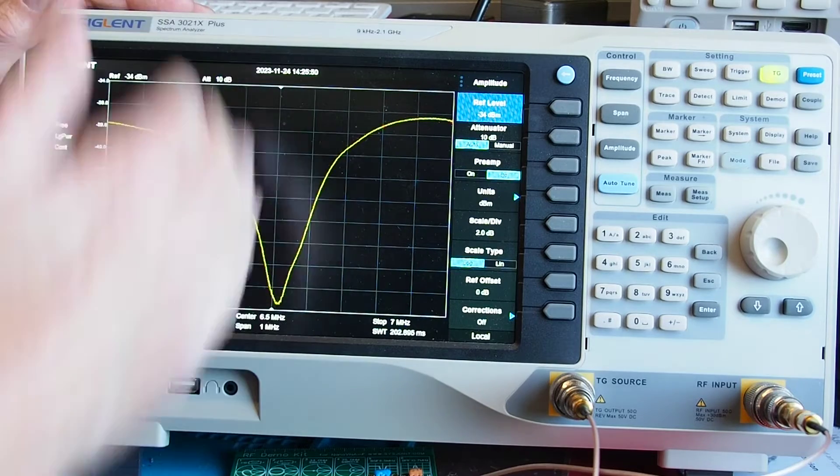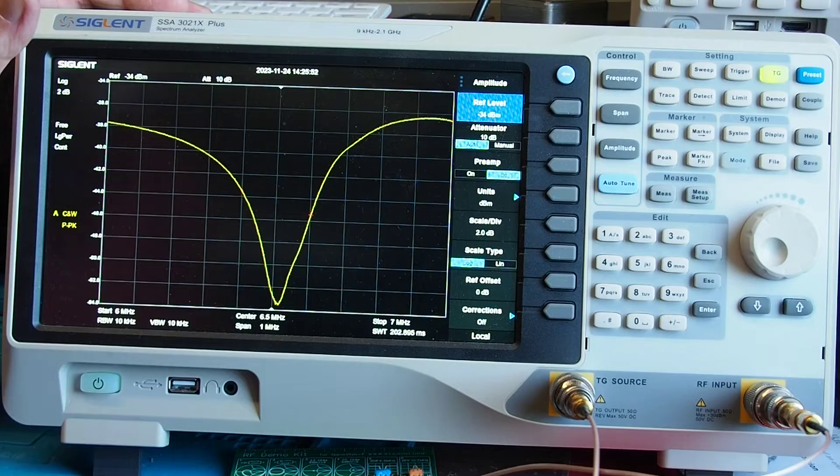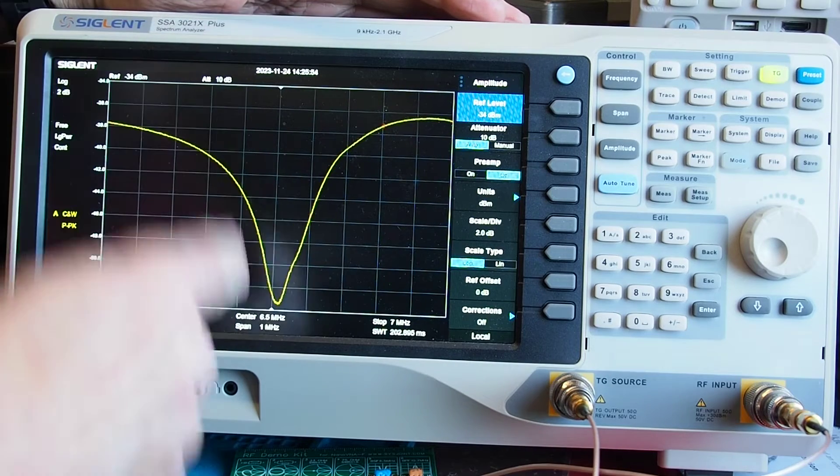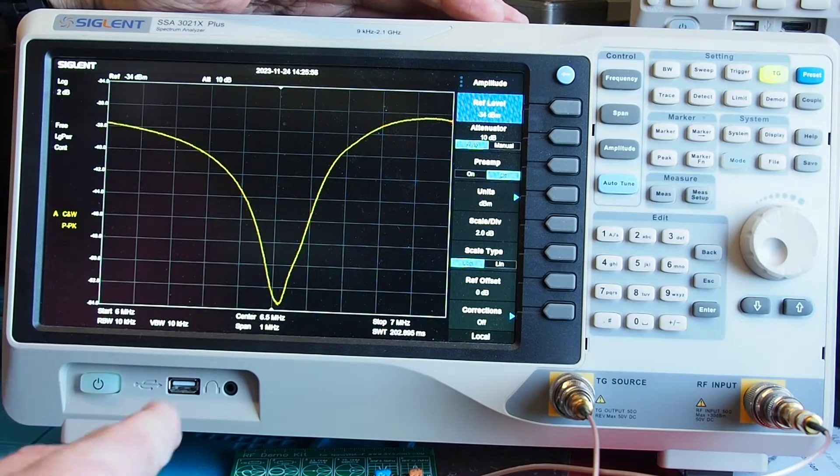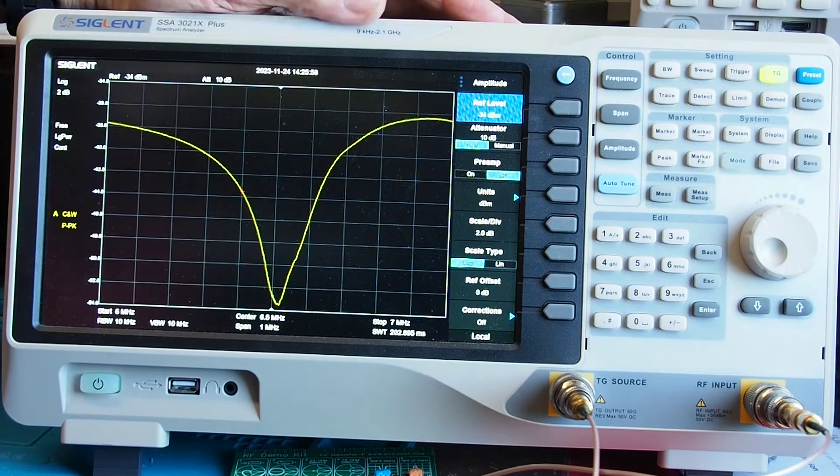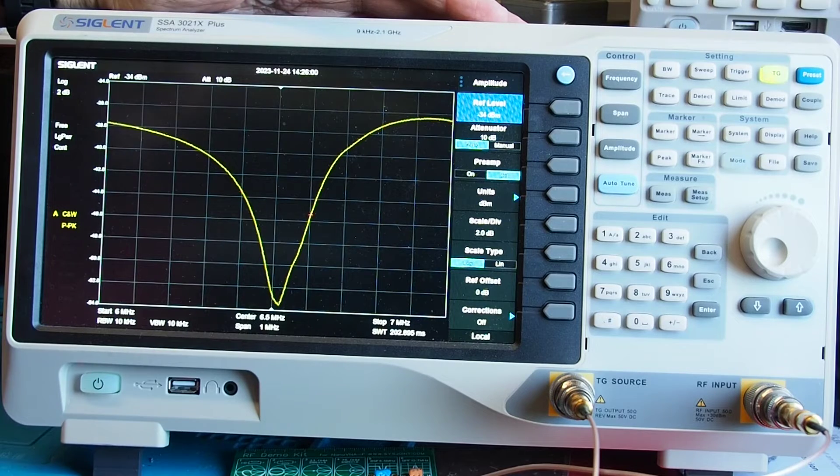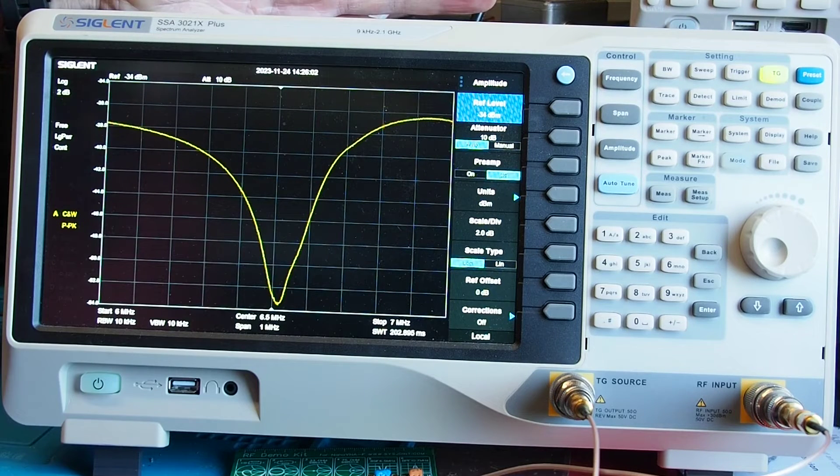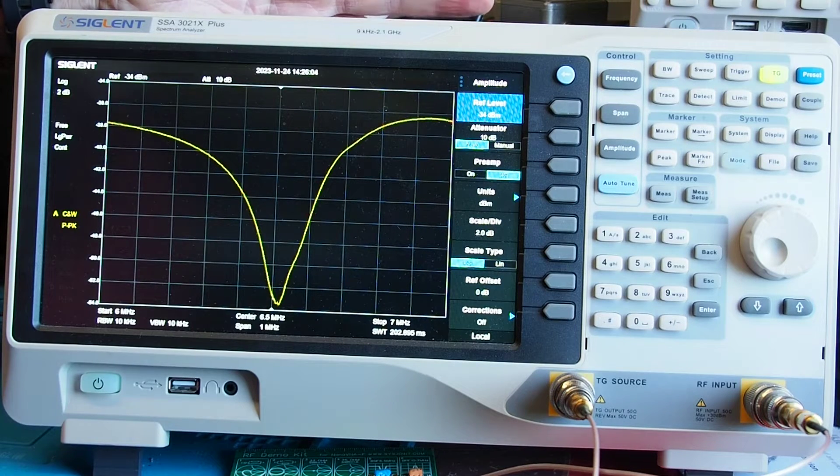So that's the band stop filter on 6.5 megs using the tracking generator you know compared to the trace we got yesterday here's a reminder of it it's totally different and a great deal easier.